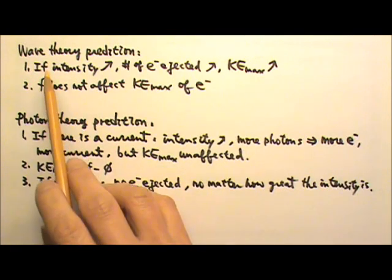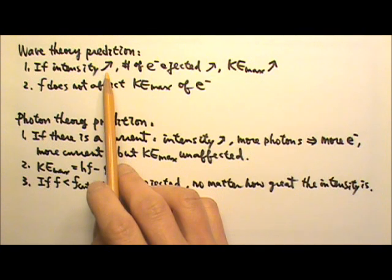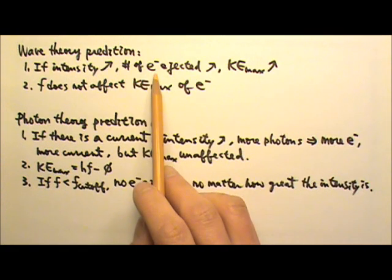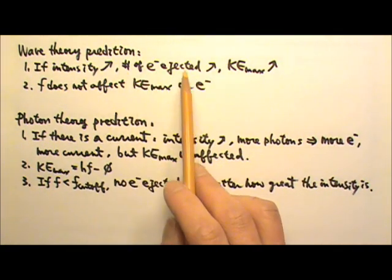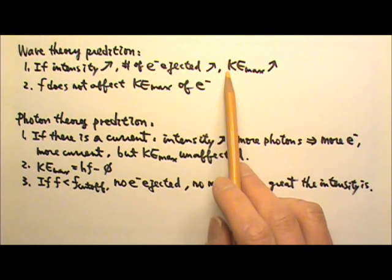If light is a wave, higher intensity incoming light means larger amplitude, more energy. That means more electrons can absorb the energy from the light, therefore more electrons will be ejected. And each electron can get more energy, therefore they will get more maximum kinetic energy.